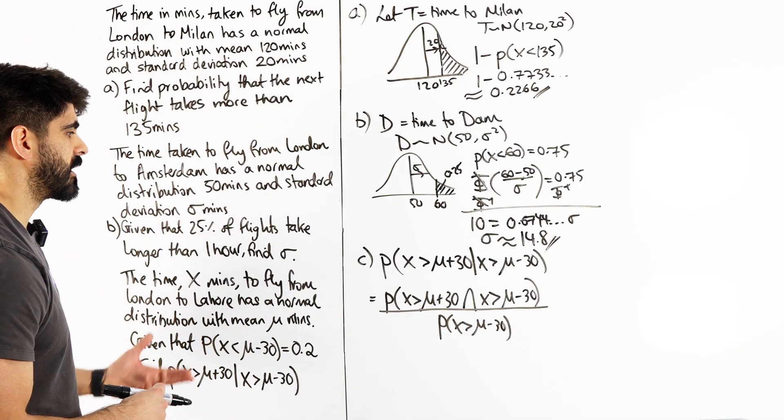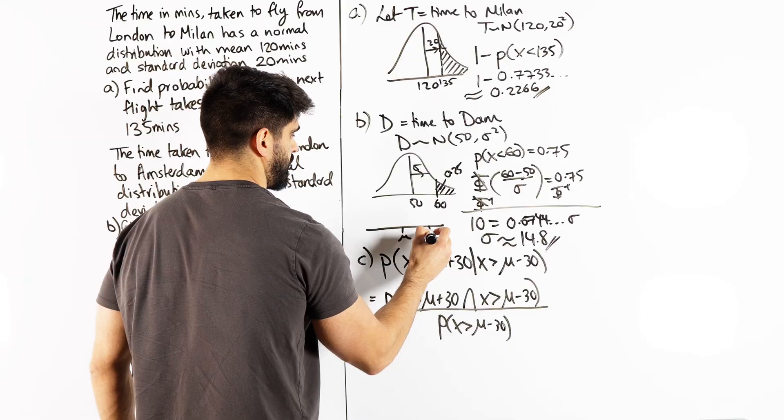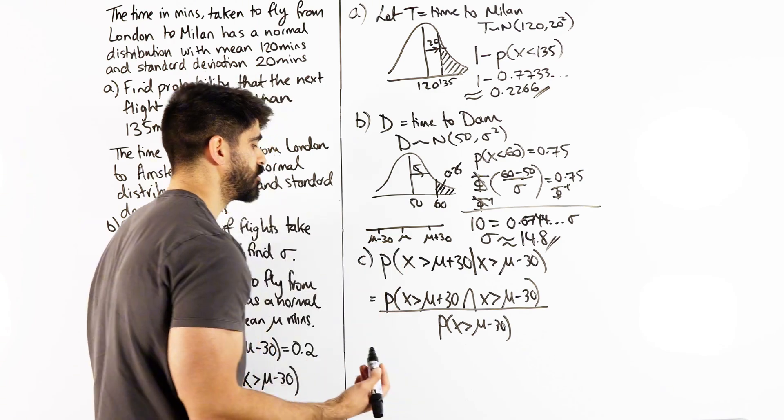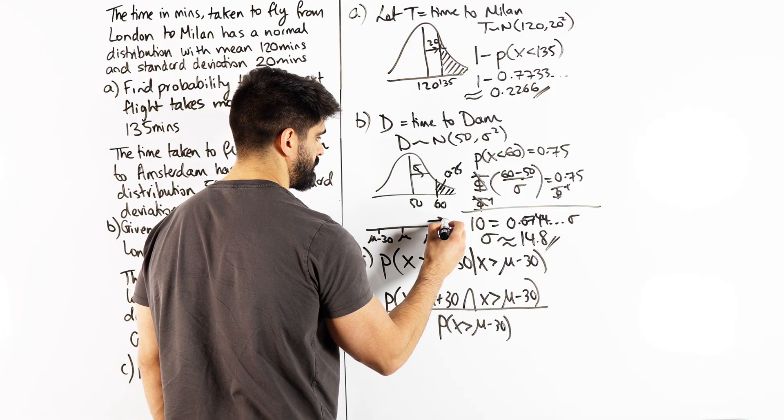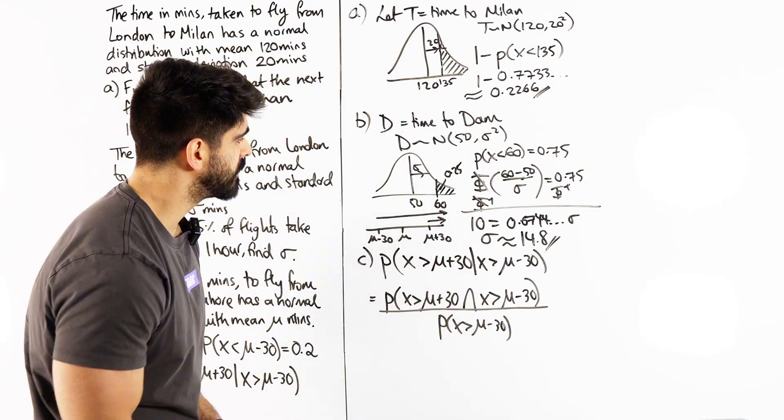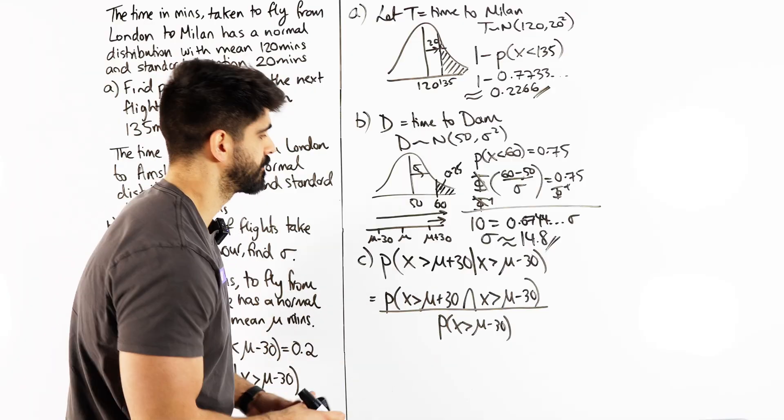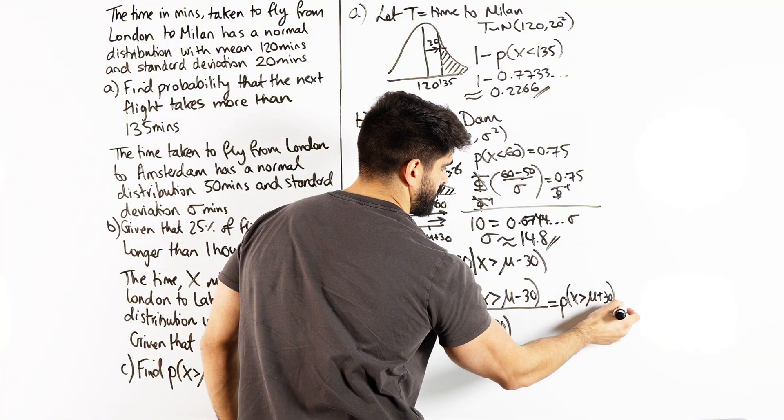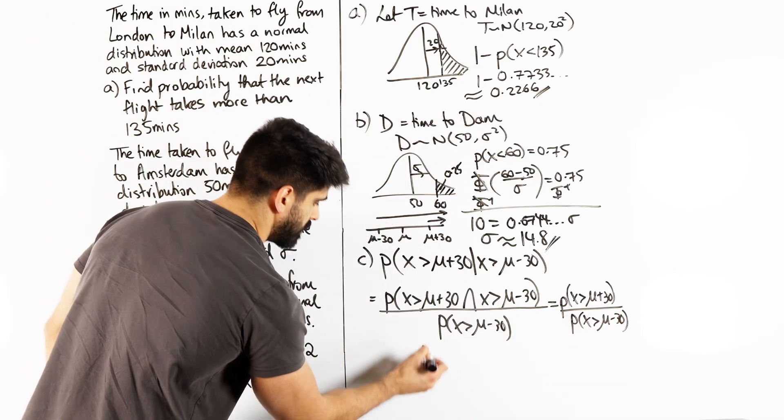Now, if we were to plot this on a number line, that numerator is actually a really simple probability. So if I look here, you have mu, you have here mu plus 30 and here mu minus 30. First thing I notice that there's symmetry. So I want X to be greater than mu plus 30. I want this and I want this. So we're just looking for the overlap. This numerator is just the probability that X is greater than mu plus 30 divided by this.